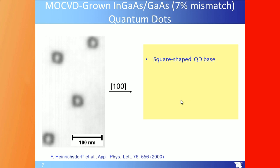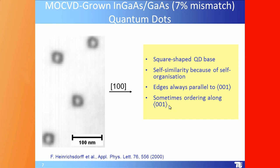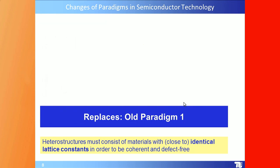Here is a picture of MOCVD-grown InGaAs/GaAs with 7% lattice mismatch. This transmission electron microscopy image shows a square-shaped quantum dot base. You see self-similarity due to self-organization — the whole growth process is driven by self-organization, with edges always parallel to [001], and sometimes ordering also along [001].